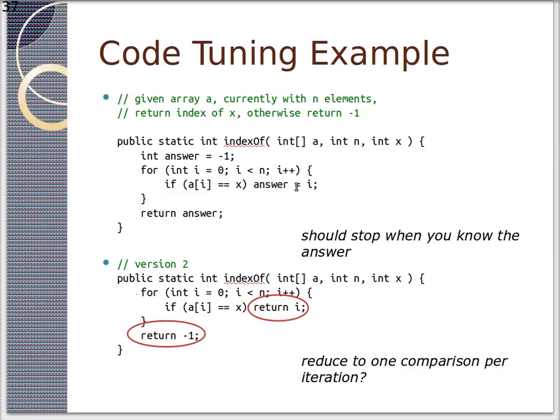But you might be thinking, why don't we just return right there? Maybe you should just stop when you know the answer. So version 2 is pretty well the same thing, except we return when we have the answer, and we return negative 1. Doesn't this stop us from comparing? Maybe it's faster. It can be.